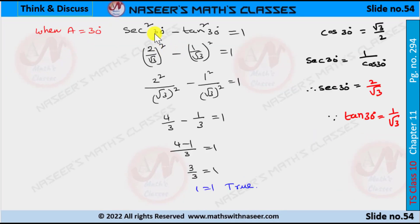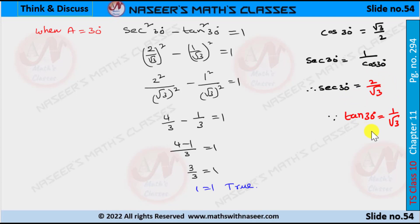When a = 30°, the identity is written as sec²30° − tan²30° = 1. We know that cos30° = √3/2, so sec30°, which is the reciprocal of cos30°, is 2/√3. And tan30° = 1/√3.